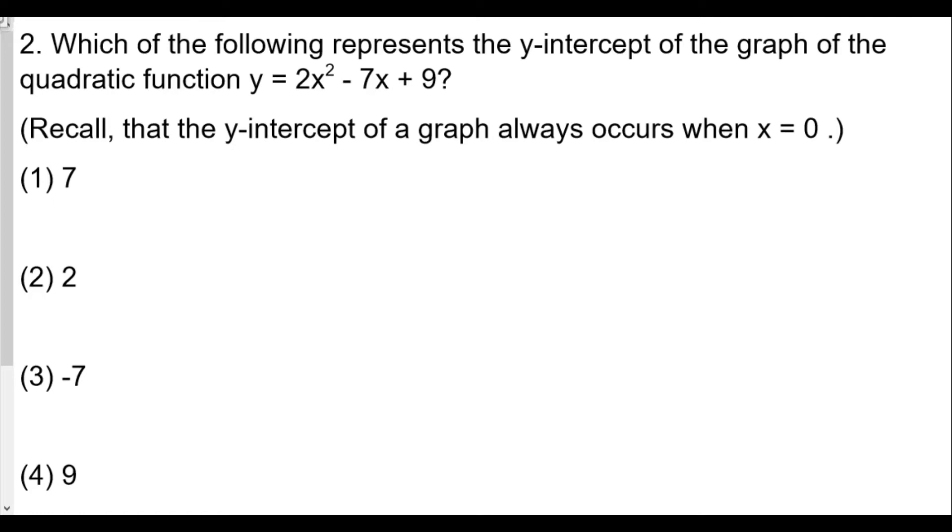Question number two: which of the following represents the y-intercept of the graph of the quadratic function y equals two x squared minus seven x plus nine? The hint is that the y-intercept of the graph always occurs when x equals zero. We're going to solve for y when x equals zero. We said in this case that whenever we plug in zero, we always get the constant at the end. So we get y equals nine. The y-intercept for a polynomial is just the constant by itself. That's choice four.